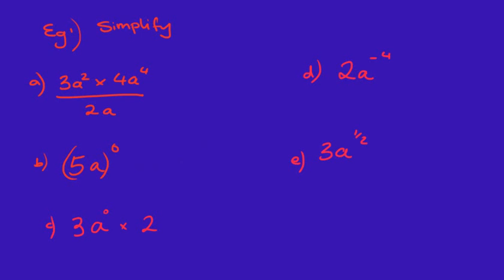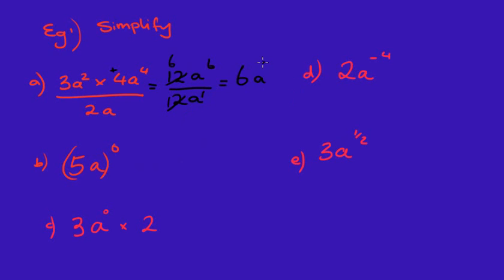Hopefully you've had a crack at those questions. The first one I call a double-barrel question — two steps. Simplify the top part first: 3 times 4 gives 12 for the numbers, and a squared times a to the four adds the powers to give a to the six, so we have 12a to the six over 2a. Then 12 divided by 2 is 6, and a to the six divided by a to the one leaves a to the power of five. Answer: 6a to the power of five.